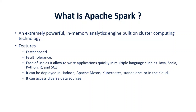The fourth feature is deployment: it can be deployed in a distributed computing system such as Hadoop, Apache Mesos, Kubernetes, or standalone. Nowadays, we have a lot of managed services in the cloud where Apache Spark is available. And the last feature is that it can access a variety of data sources.